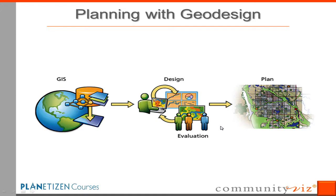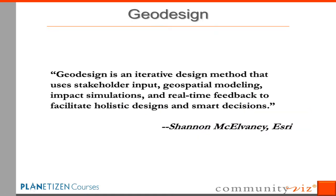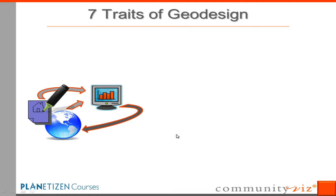By doing this you have a faster process, a better informed set of decisions, and better buy-in. So that's the big picture on geodesign. Now let's define geodesign a bit more carefully. Here's a definition from Shannon McElvaney of Esri: geodesign is an iterative design method that uses stakeholder input, geospatial modeling, impact simulations, and real-time feedback to facilitate holistic designs and smart decisions. Let me break that down into what I think are the seven key traits of geodesign. First, it's an iterative design method — it goes in cycles.